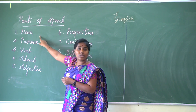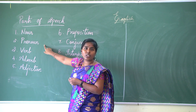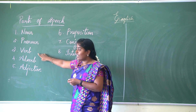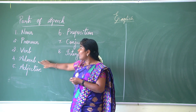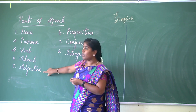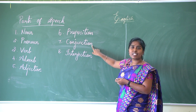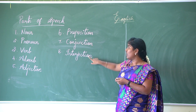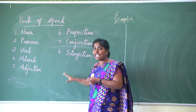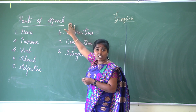The first one is noun, second one is pronoun, third one is verb, fourth one is adverb, fifth one is adjective, sixth one is preposition, seventh one is conjunction, and eighth one is interjection. These eight parts play a major role in constructing speech.